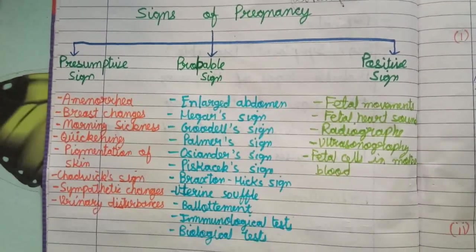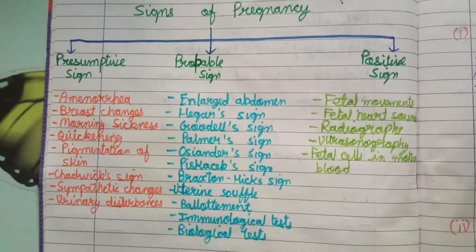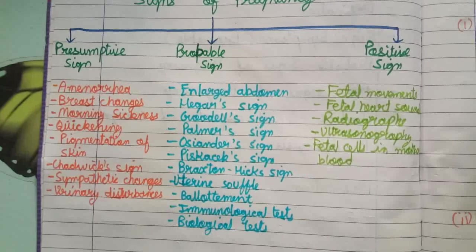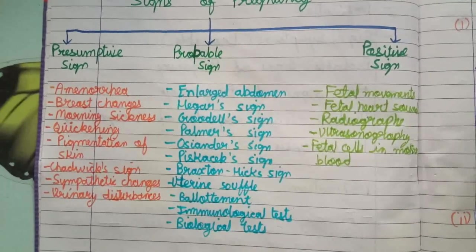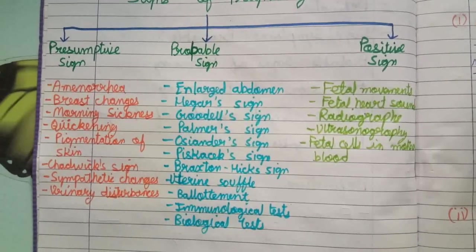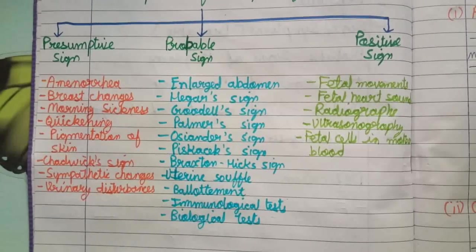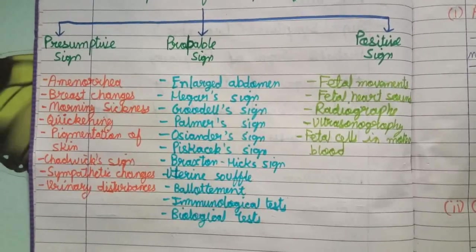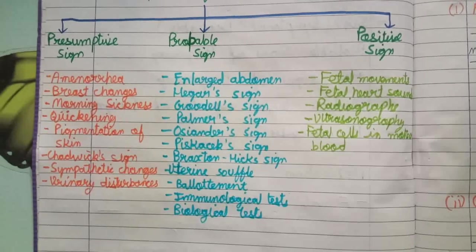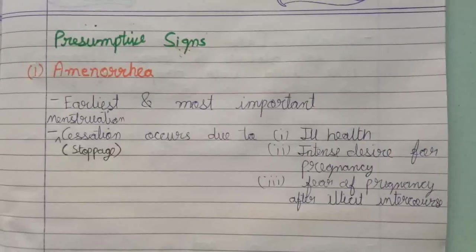There are three categories of signs of pregnancy: presumptive signs, probable signs, and positive signs. Presumptive signs include amenorrhea, breast changes, morning sickness, quickening, pigmentation of skin, Chadwick sign, sympathetic changes, and urinary disturbance. Probable signs include enlarged abdomen, Hegar sign, Goodell sign, Palmer sign, Osiander sign, Piskacek sign, Braxton Hicks sign, ballottement, uterine souffle, immunological tests, and biological tests. Positive signs include fetal movement, fetal heart sound, radiographs, ultrasonography, and fetal cells in the mother's blood.